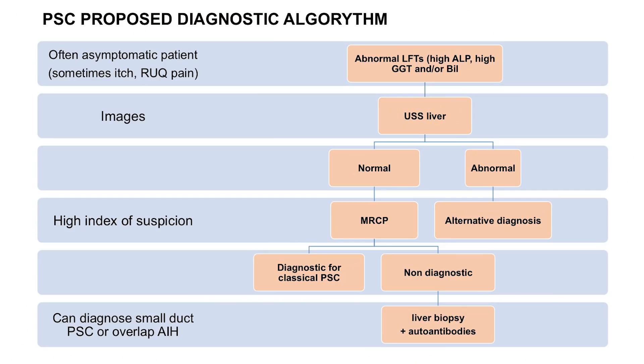And is autoantibody testing helpful? No. PSC is the one autoimmune liver condition where autoantibody testing is not particularly helpful. There is a recognised association between PSC and P-ANCA, but the sensitivity and specificity are so low that it's not particularly helpful in routine practice. The one exception is in patients who have a disproportionately high ALT or AST, where autoantibody testing can be helpful to look for an overlap syndrome with autoimmune hepatitis.